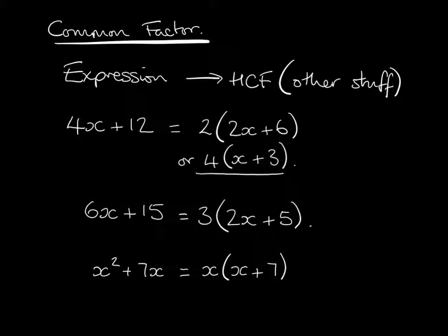Now let's look at that again. If we've got x as our factor, x times x gives us x squared, and x times 7, they go together to make 7x.